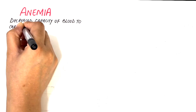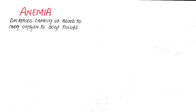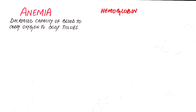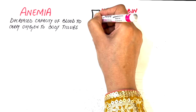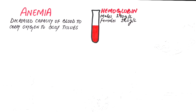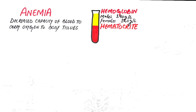Anemia is defined as decreased capacity of the blood to carry oxygen to the body tissues. It's a condition in which the number of red blood cells — the hematocrit — or the hemoglobin concentration is lower than normal. The normal hemoglobin concentration in males is 140 grams per litre, while in females it's 120 grams per litre. The normal hematocrit for an adult male is 45 to 52 percent, and for an adult female it's 37 to 48 percent. Deficiency in hematocrit or hemoglobin levels below normal can cause anemia.